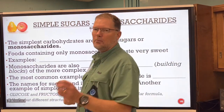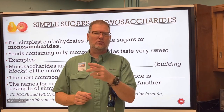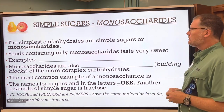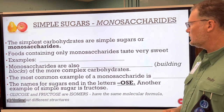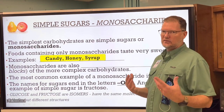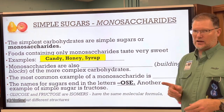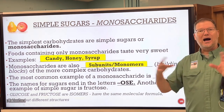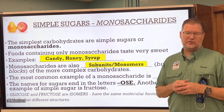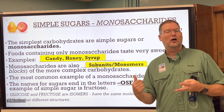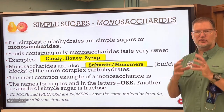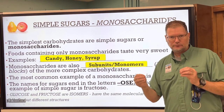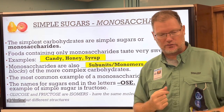Simple sugars are called monosaccharides — mono meaning one, saccharide just means sugar. Foods containing only monosaccharides taste very sweet, like candy, honey, and syrup. Monosaccharides are also the subunits or monomers of polymers — of complex carbohydrates like pasta, bread, and rice. The simple sugars, the mono meaning one, make the poly meaning many. They're like the rungs of a ladder or individual pearls of a pearl necklace.